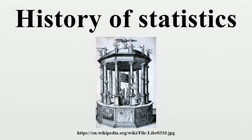With its concerns with searching and effectively presenting data, statistics has overlap with information science and computer science. The term statistics is ultimately derived from the New Latin Statisticum Collegium and the Italian word Statista. The German statistic, first introduced by Gottfried Ackenwald, originally designated the analysis of data about the state, signifying the science of state. It acquired the meaning of the collection and classification of data generally in the early 19th century. It was introduced into English in 1791 by Sir John Sinclair when he published the first of 21 volumes titled Statistical Account of Scotland.